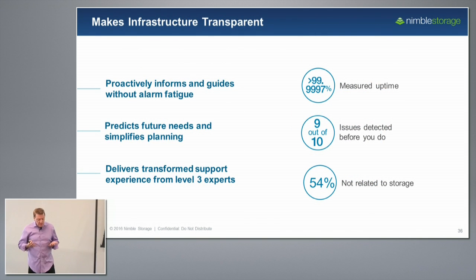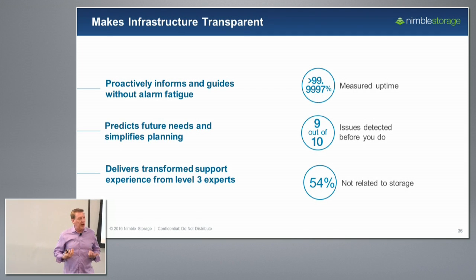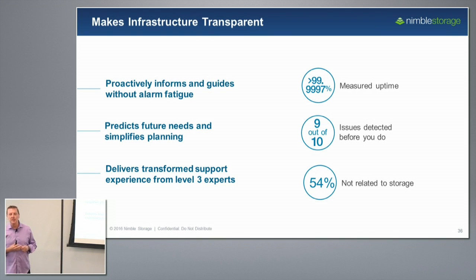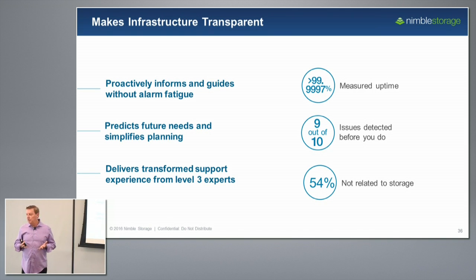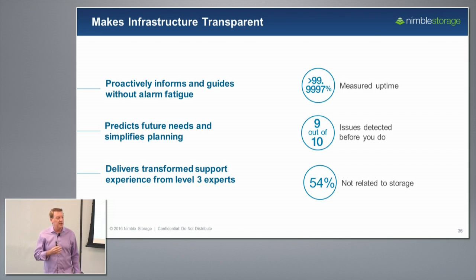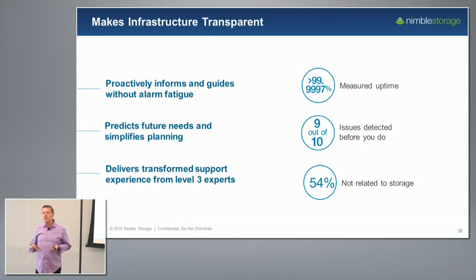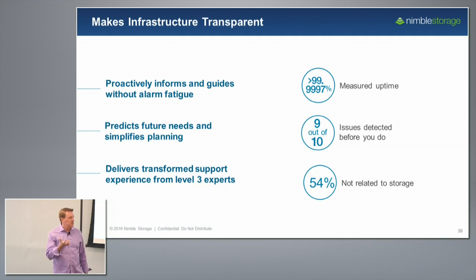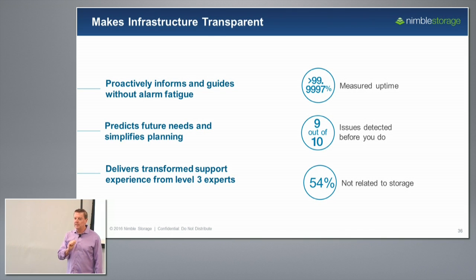When you get all of that data, we're very empowered having all of that information. There are three main categories that all of our analytics fall into — really about being very proactively informing and guiding our customers. We have the InfoSight portal, where the customer can get a view. You can't look at 25 billion things, but we analyze that and present you with meaningful information that matters to your app data gap — how we're monitoring, detecting, and hopefully predicting and avoiding it altogether.